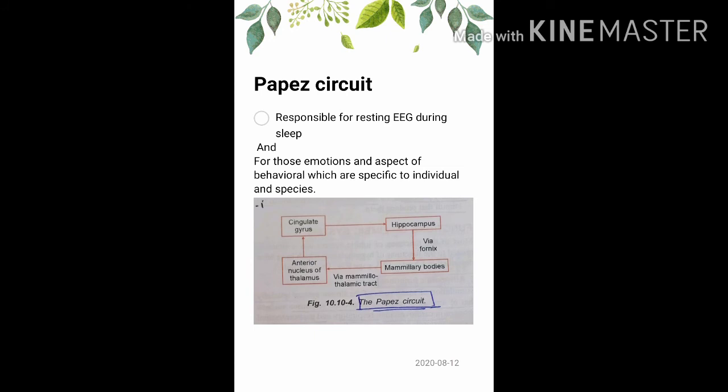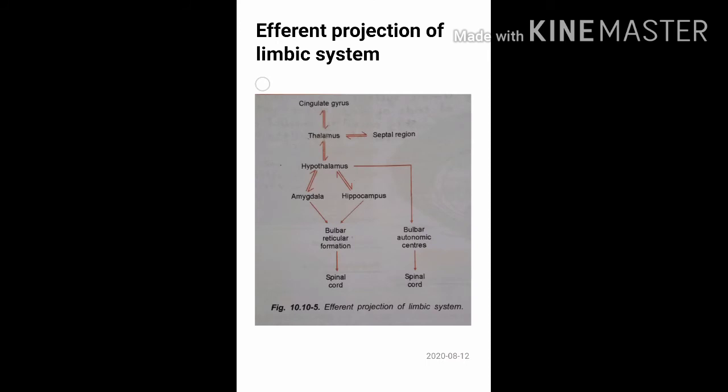The Papez circuit is a closed circuit formed by connections between the cingulate gyrus, hippocampus, mammillary bodies, and the anterior nucleus of the thalamus. This circuit is important for resting activity during sleep and for those emotions and behaviors specific to an individual and to a species. The efferent projections of the limbic system are mainly through the hypothalamus, which influences autonomic centers. The amygdala and hippocampus also affect the bulbar reticular formation.